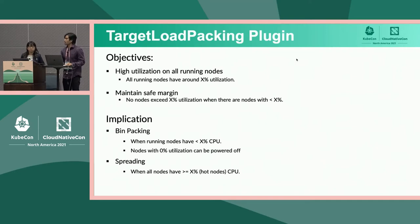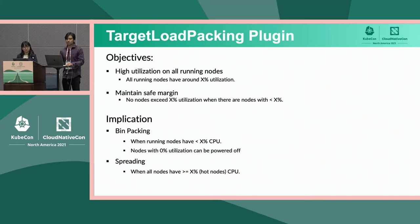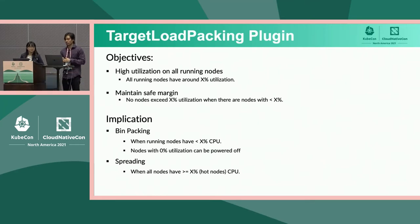Coming to the meat of the design: for the first plugin we contributed, there are two main objectives for the target load packing plugin. First, we want to achieve high utilization across all running nodes in the cluster, around a given threshold we can set before running the plugin. We do so by packing pods as long as the CPU utilization is under the given threshold. The other objective is to maintain a safe margin for CPU usage spikes due to unpredictable loads, by spreading incoming pods onto nodes which results in higher safety — meaning more leftover CPU cores.